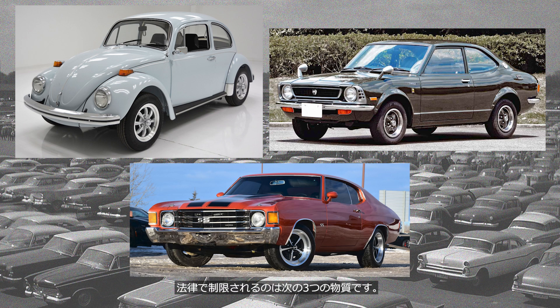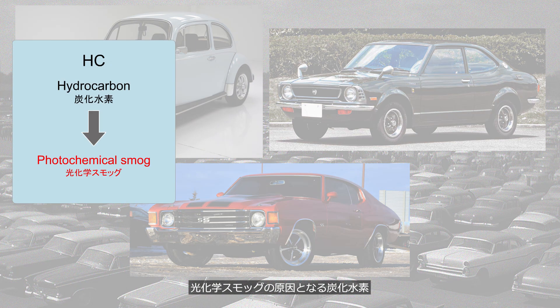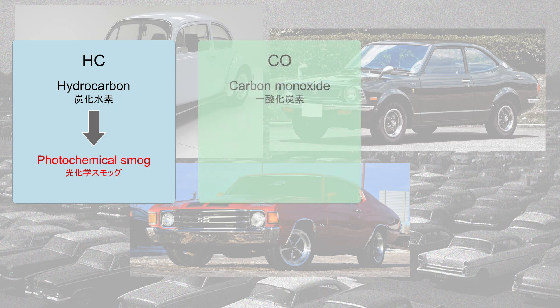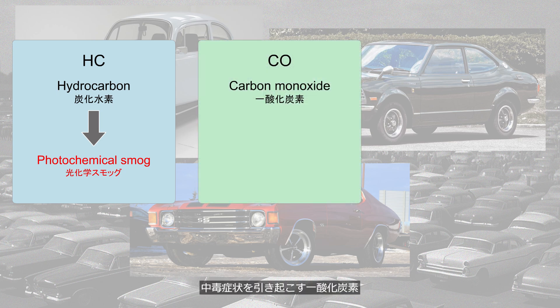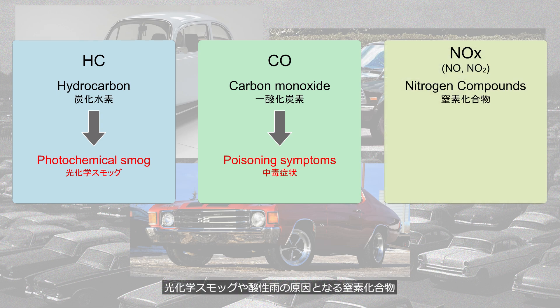The following three substances are regulated by law: hydrocarbons, which cause photochemical smog; carbon monoxide, which causes poisoning symptoms; and nitrogen compounds, which contribute to photochemical smog and acid rain.